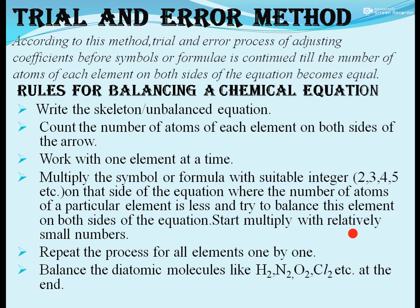There are certain rules for balancing a chemical equation using the trial and error method, where coefficients before symbols or formulae are adjusted until atoms of each element are equal on both sides. First, write the unbalanced equation. Then count atoms of each element on both sides. Multiply the symbol or formula with a suitable integer on the side where atoms are fewer, repeating for all elements. Two tips: start with small numbers and balance diatomic molecules like H2, N2, O2, Cl2 last.